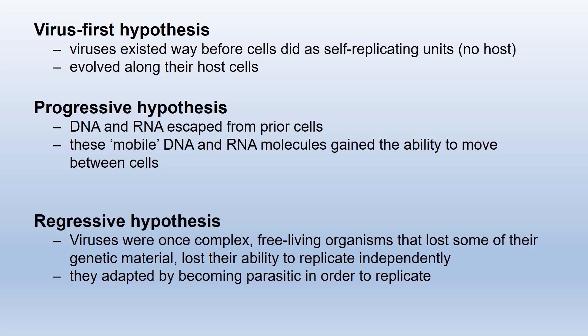The third and last hypothesis is called the regressive hypothesis. It states that viruses were once complex, free-living organisms that lost their genetic material, lost their ability to replicate independently, and then adapted to become parasitic in nature. This hypothesis proposes that viruses were once able to replicate on their own without a host cell. This differs from the virus-first hypothesis because it is proposed that viruses were once something other than viruses — over time they lost their genetic material and with it their ability to replicate by themselves. These three hypotheses have some indirect evidence that supports them, but to date none of them have been proven.